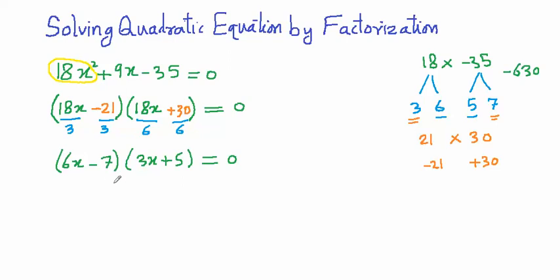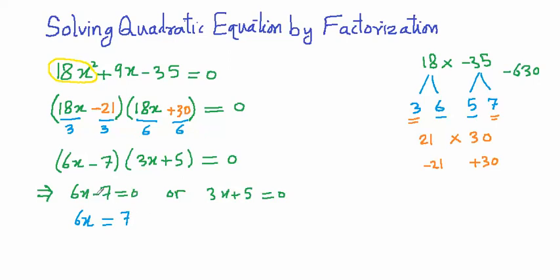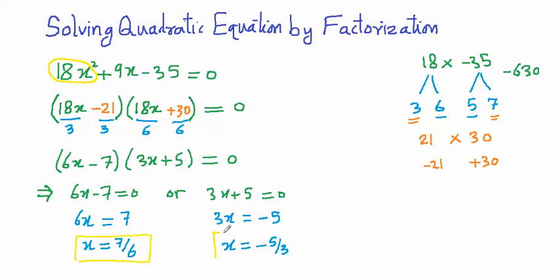Since the product of these two expressions equals 0, either one or both must equal 0. So we write: 6x - 7 = 0, which gives 6x = 7, so x = 7/6. Or 3x + 5 = 0, which gives 3x = -5, so x = -5/3. These are the two roots of this equation.